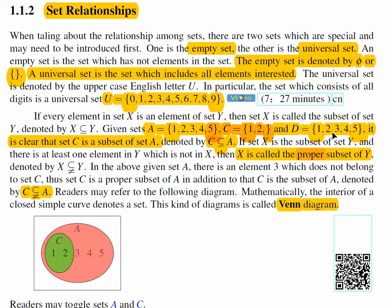In this case, every element inside D is also inside A. For example, 3 is in D and also in A. So you may say D is a subset of A as well.